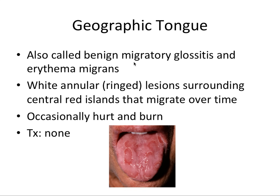Geographic tongue also goes by two other names: benign migratory glossitis and erythema migrans. It has white annular lesions — white rings — surrounding central red islands that literally migrate over time and move around on the tongue. This is how you get the 'migratory migrans' terminology, with 'erythema' referring to the redness. It occasionally hurts and burns, and unfortunately outside of a little symptomatic and dietary changes, there's really no treatment for this condition.